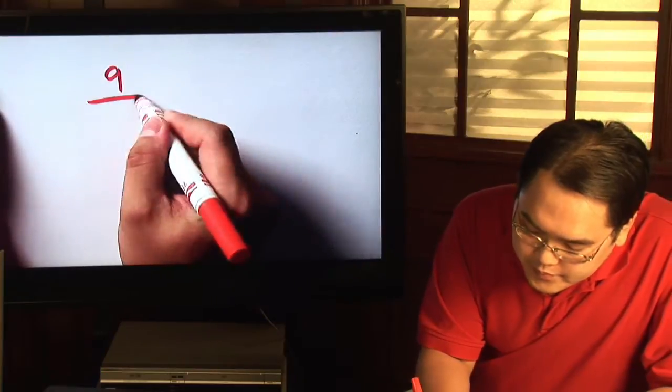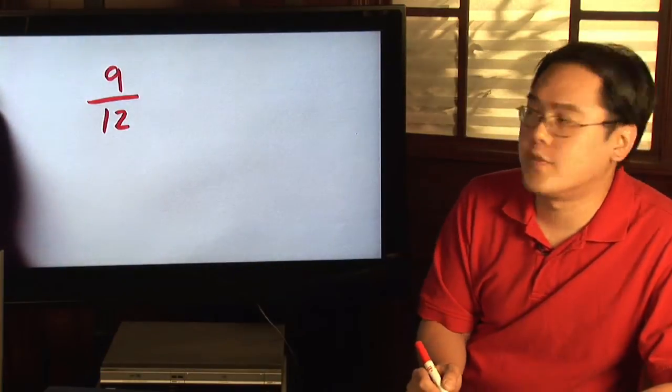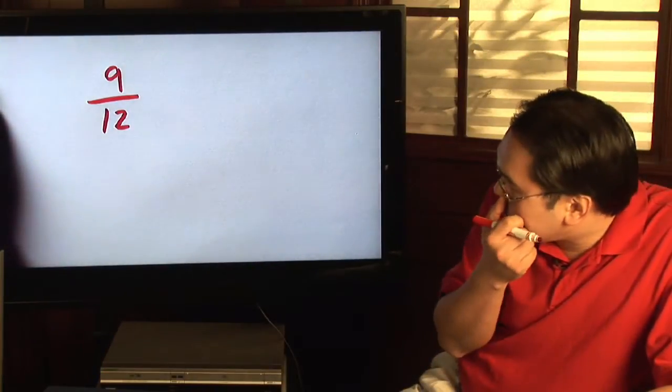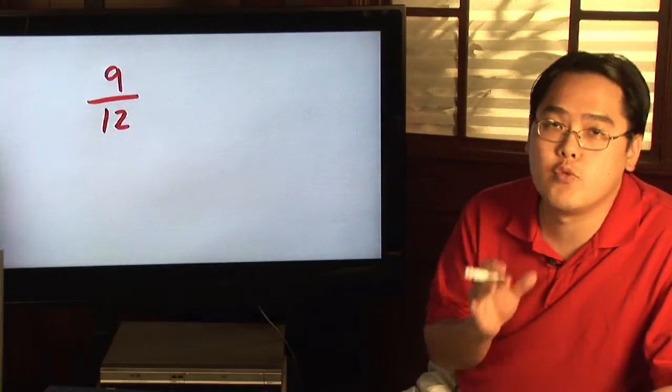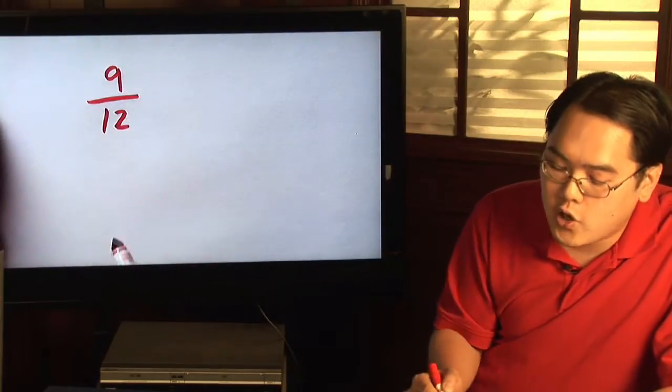Suppose you have a fraction of the nature 9 over 12. Now looking at both numbers, what you have to ask yourself in reducing these is what is the largest number that goes into 9 and 12 simultaneously?